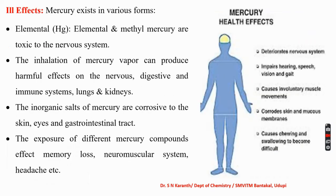What are the ill effects caused by mercury? Mercury exists in various forms — it may be in elemental form or in the form of methyl mercury, which is very toxic to the nervous system. When we inhale mercury, it affects the entire body and deteriorates the nervous system. Inhalation of mercury vapour can produce harmful effects on the nervous, digestive, and immune systems, lungs, and kidney. It also causes impaired hearing, speech, vision, and involuntary muscle movement.